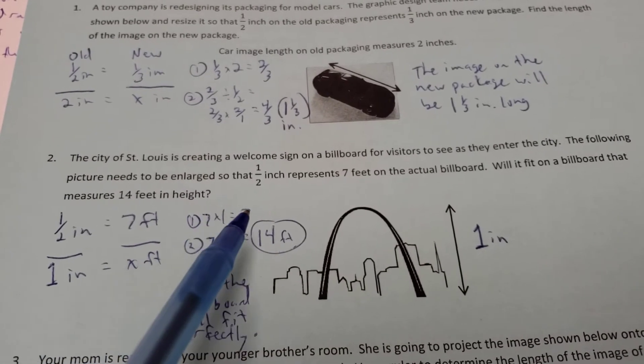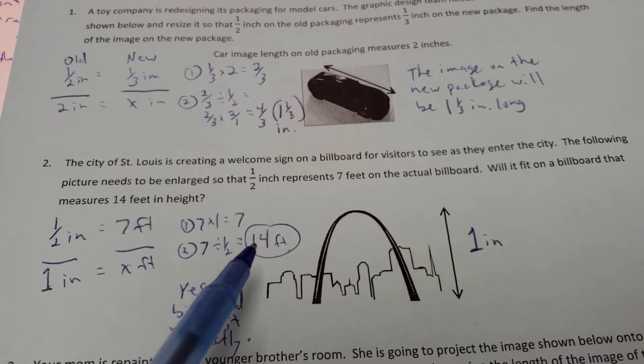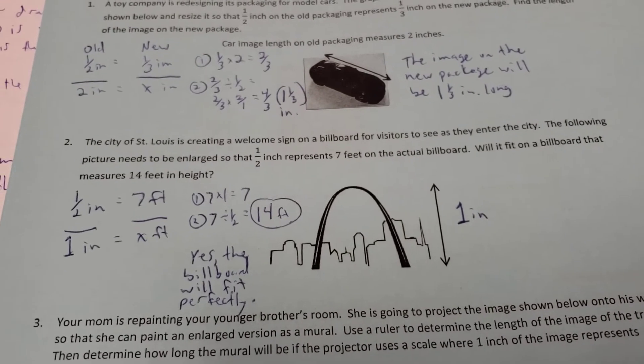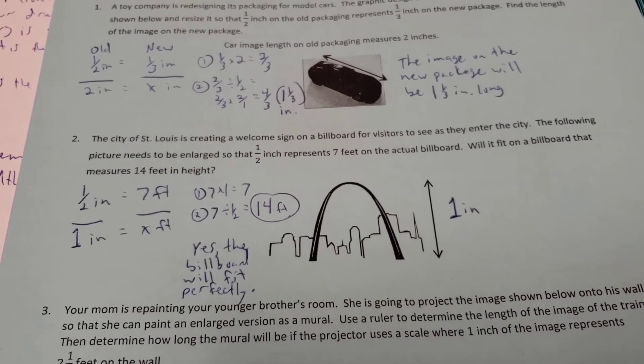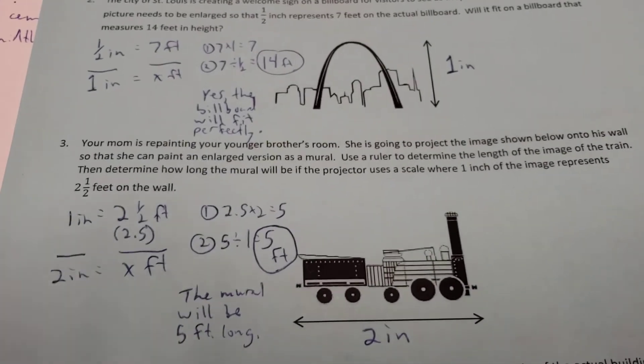Well, cross-multiply what I can. Seven times one is seven. And if I have my answer by one-half, and seven divided by a half gives me 14. So yes, that billboard will fit perfectly on that 14-foot billboard. A 14-foot image will fit on the 14-foot billboard.